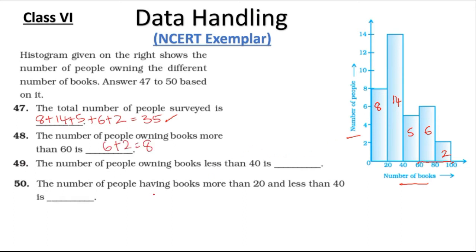Question 49: The total number of people having books less than 40. Less than 40 means we have to consider the first two classes: 0 to 20 and 20 to 40, so 14 added to 8 is 22. Question 50: The number of people having books more than 20 and less than 40 — we consider only that class, so 14 people.